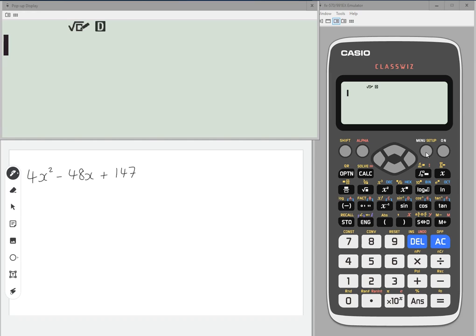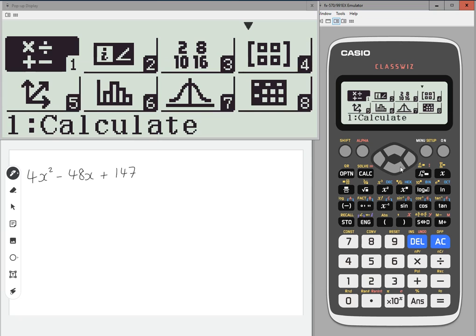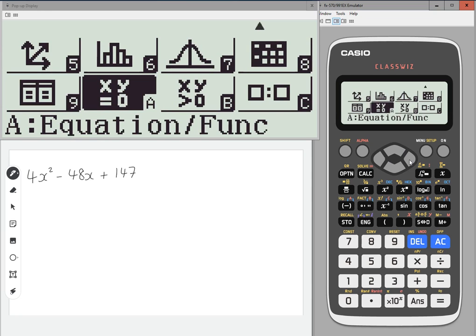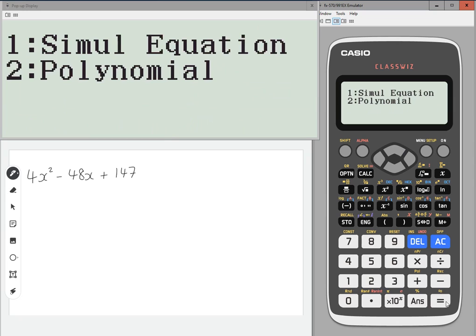We're going to go into solving the equation, so as if we're going to put it equal to zero and solve it. We go to menu, then scroll down until you hit A, equation function. And then you go to polynomial, so number two.